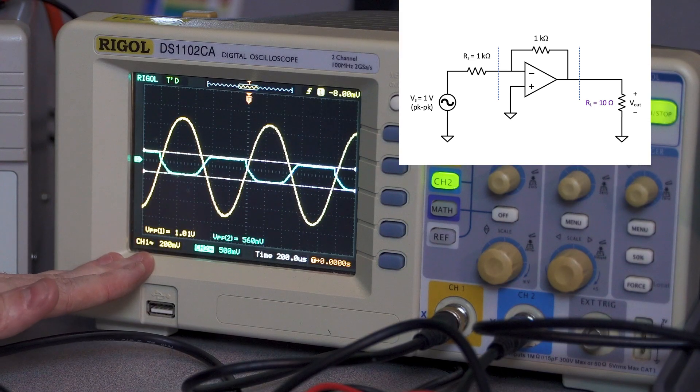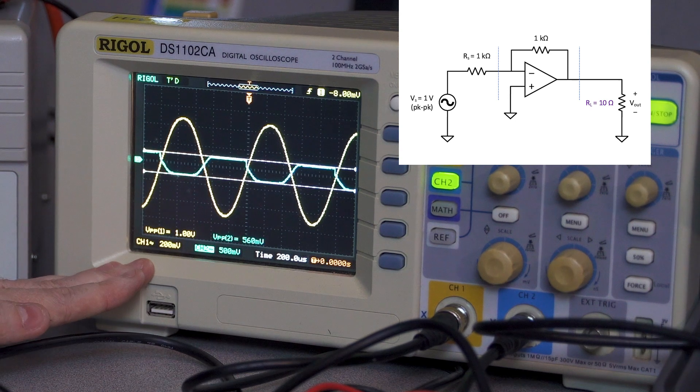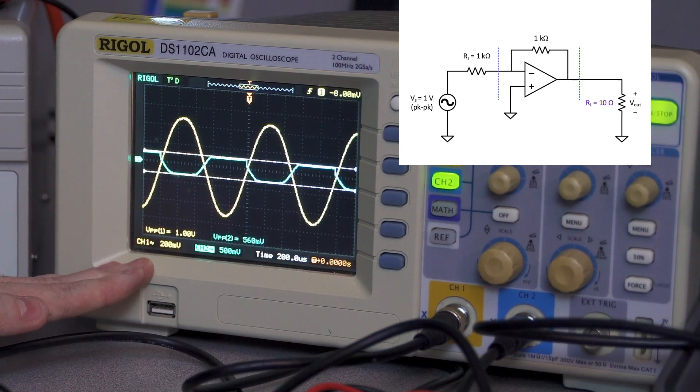Let's now try the 10 ohm load. And again, this amplifier is having trouble. The reason it's having trouble with the 10 ohm load is because the amplifier can't supply sufficient current in order to maintain the 1 volt output voltage.